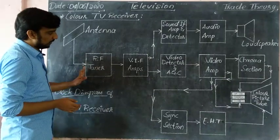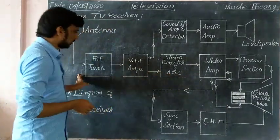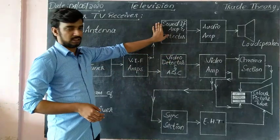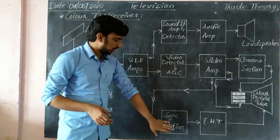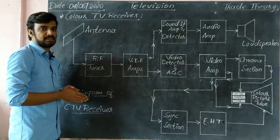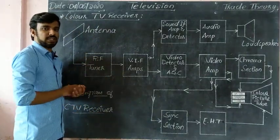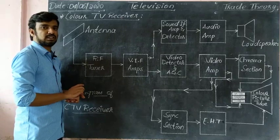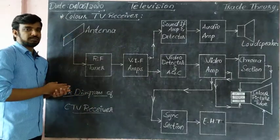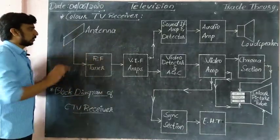First, you will check the common video section. This is the sound section, the video section, the synchronous and DHT section, and the power supply section. The power supply section is the same as in black and white TV.